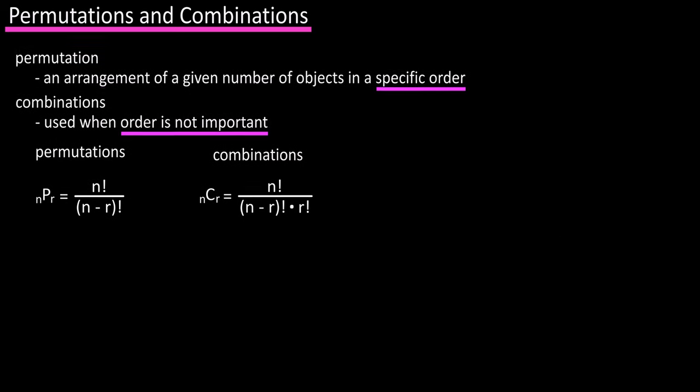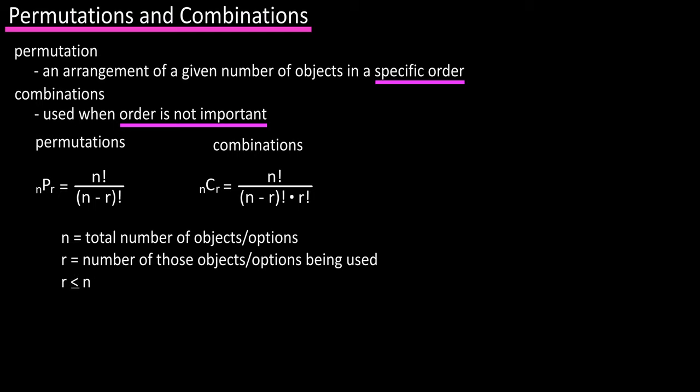Back to our formulas, the n in both of these refers to the total number of objects or options, and the r refers to the number of those objects or options being used in the question. r is less than or equal to n.